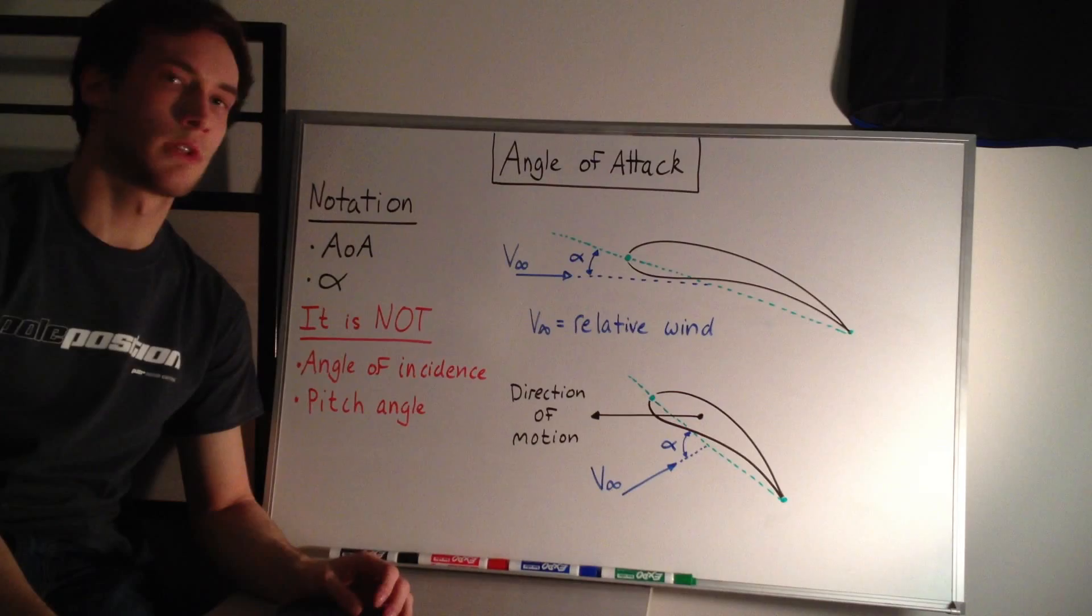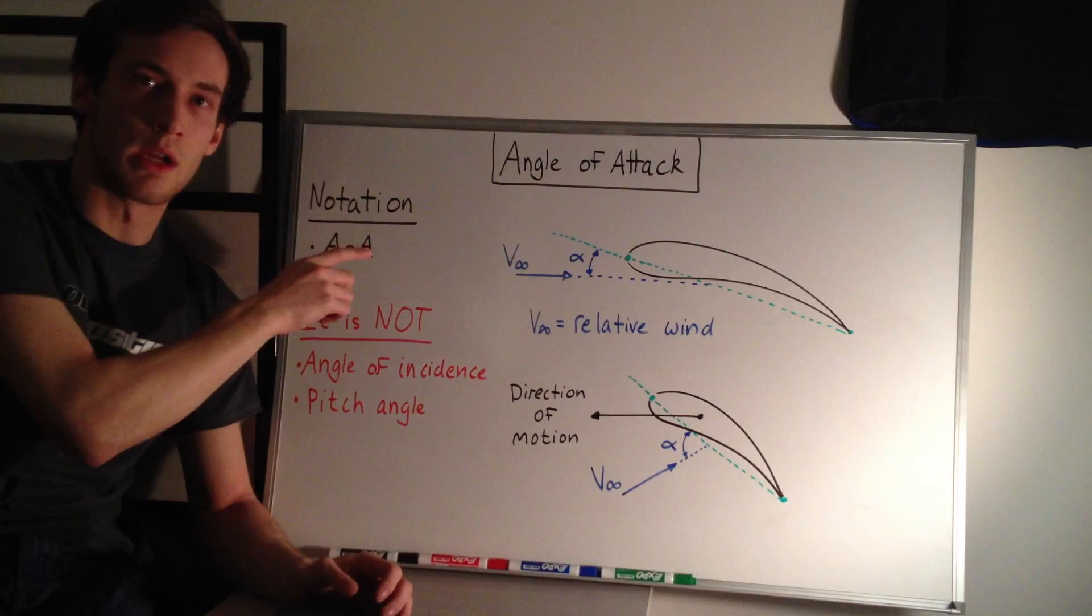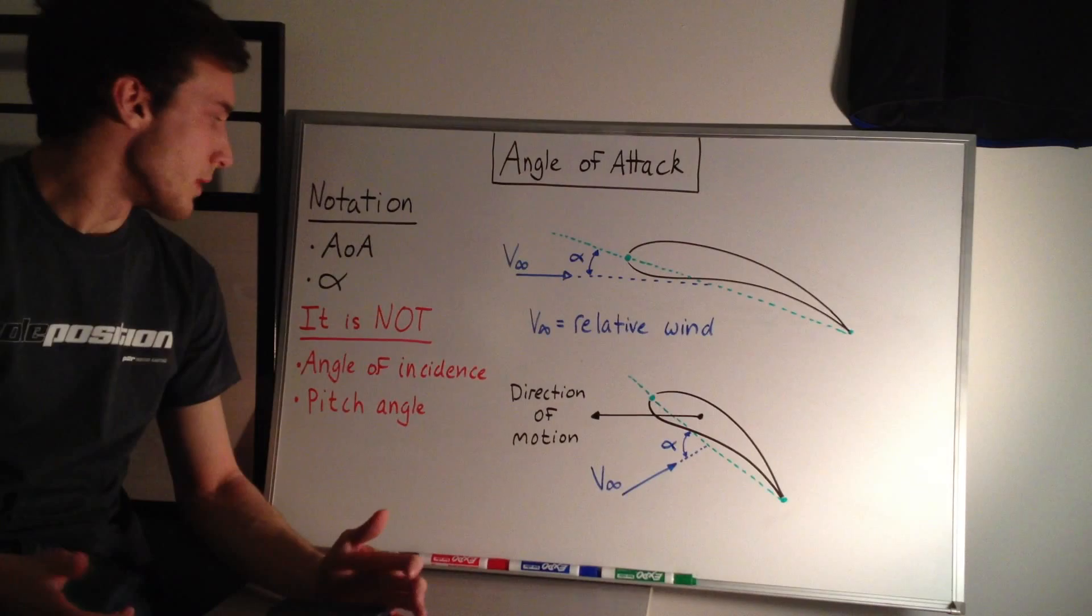So when you're reading papers or documents, you might see it written out as AOA, which stands for angle of attack. Another one that you'll most definitely see is alpha, to describe the angle.